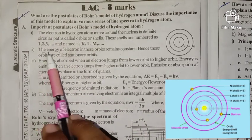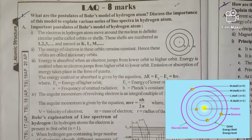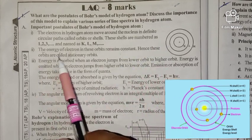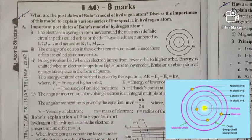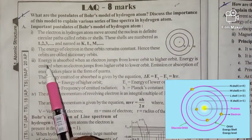The energy of the electron in these orbits remains constant. So if the electron has any energy, it will be constant. Hence, these orbits are called stationary orbits.